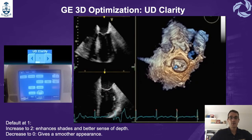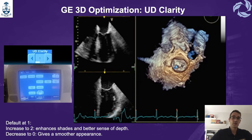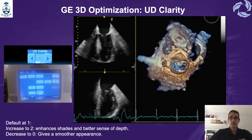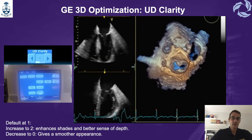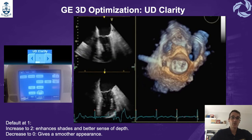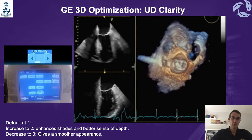You can use the function UD clarity, which is able to provide a better depth of perception. By default it is set at one, and you can go to zero or two. When you increase it to two, it enhances the shades and gets a better sense of depth. When you decrease it to zero, it gives a smoother appearance.